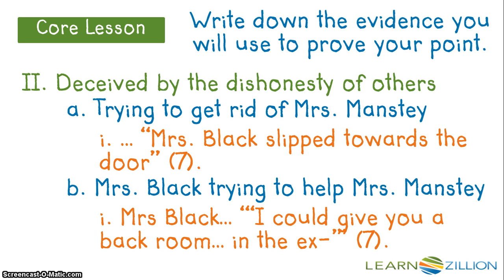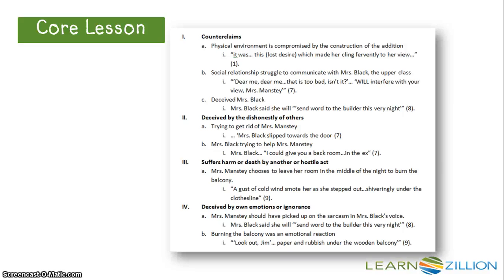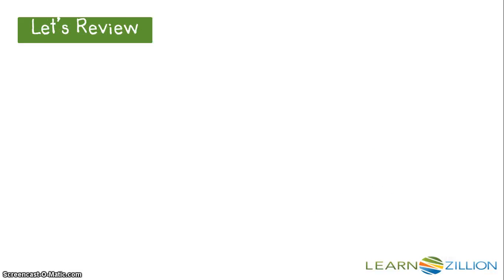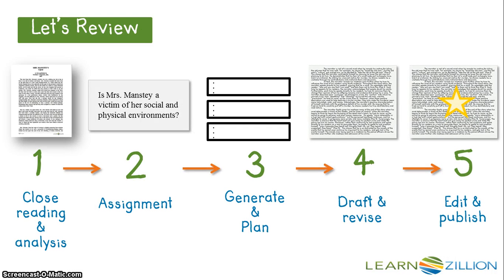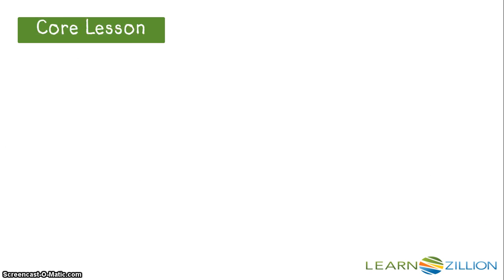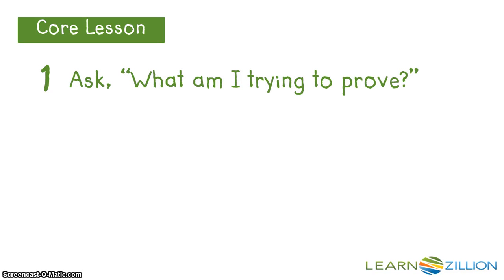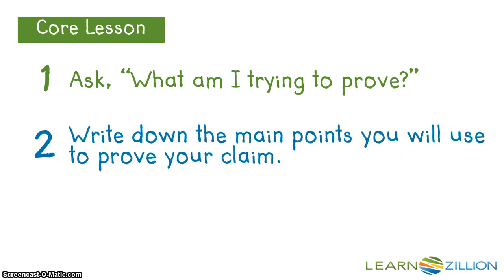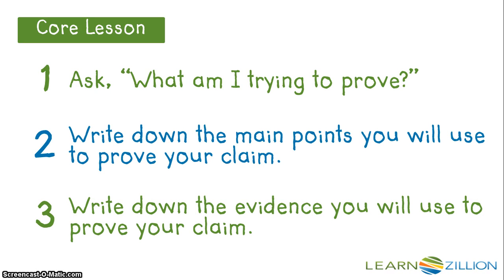So, I've modeled the outline for one body paragraph. What I would do next is do the same process for all of my body paragraphs. This is what my complete outline looks like. Now that we've organized our claims and counterclaims, let's review the writing process. We've been working on generating a plan by developing an outline. In the next lesson, we are going to draft our essay. So, when you're trying to organize your claims and counterclaims into an outline, you can follow these three steps: First, ask what am I trying to prove? Then, write down the main points you will use to prove your claim. Then, write down the evidence you will use to prove your claim.